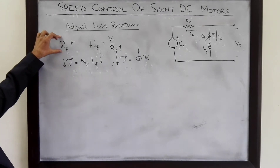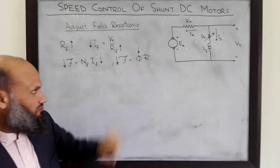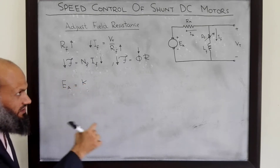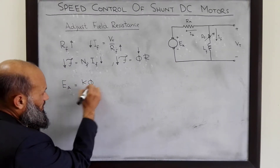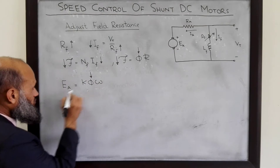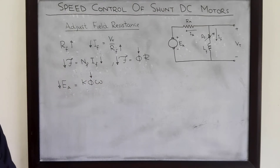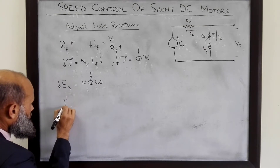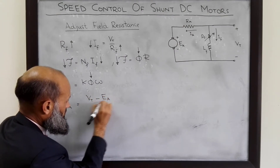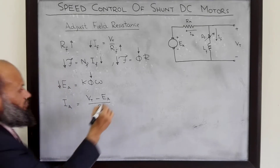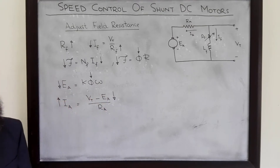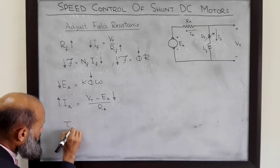One effect of an increase in RF is a decrease in flux in the machine. Furthermore, EA, the generated back EMF, is given by a constant multiplied by flux multiplied by the rotational speed of the rotor. So if flux is reduced, the generated voltage EA will also reduce. The armature current IA is given by the terminal voltage minus back EMF divided by the armature resistance, so if EA decreases, this difference increases and IA will increase.